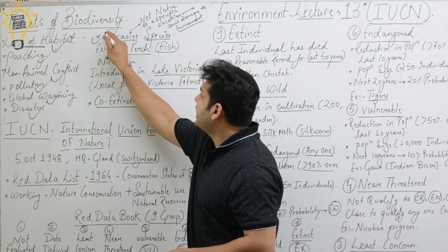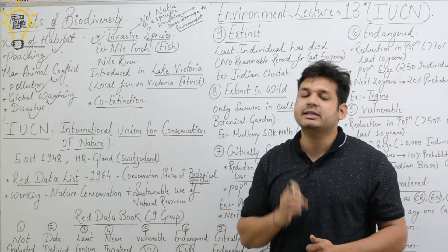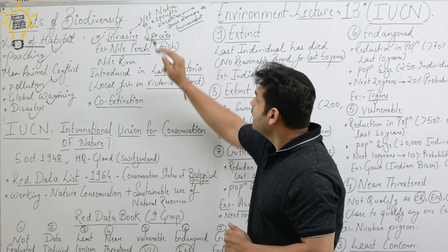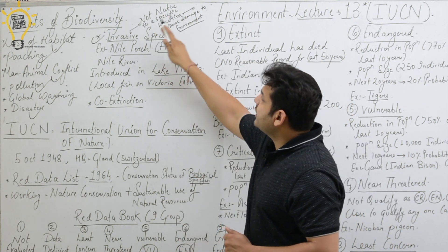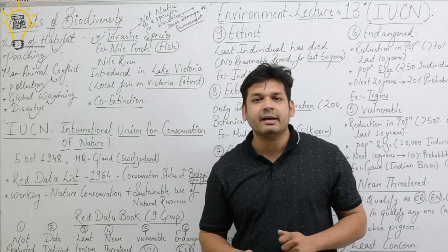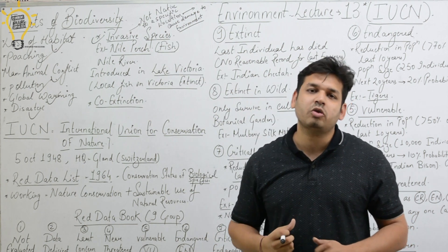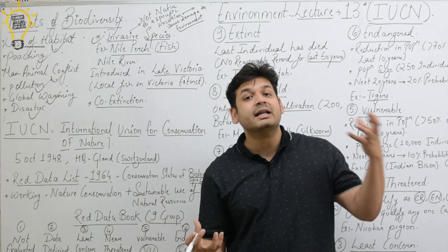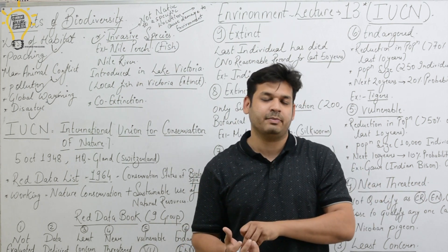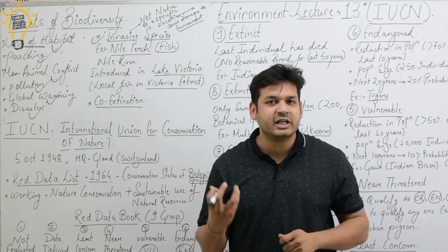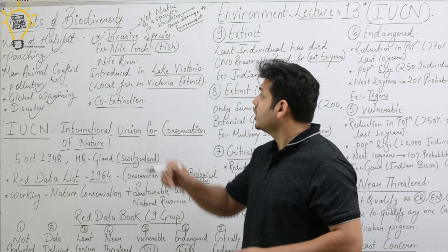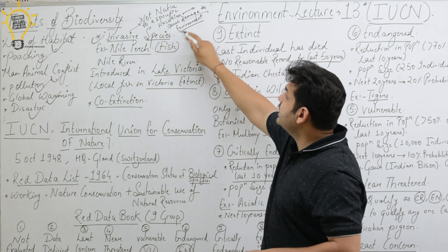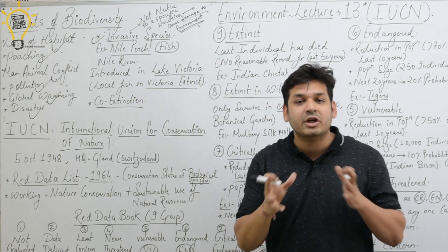Now I have a different threat to discuss, that is invasive species. This is necessary to know. Invasive species are those which are not native to a specific location — meaning they are not naturally found in that particular location; they have been brought in from outside. So they are not native to that specific location, and they are generally known to cause damage to the environment.